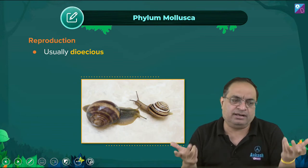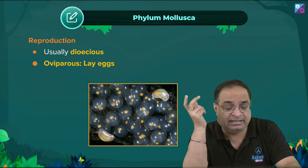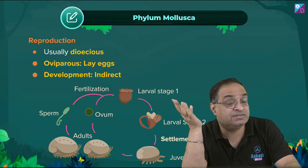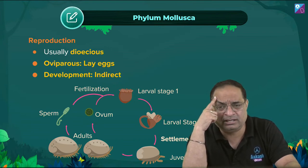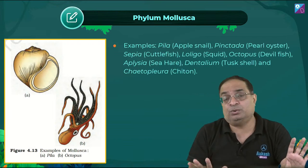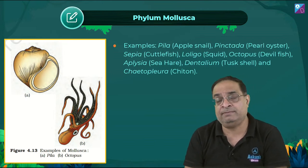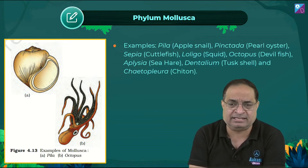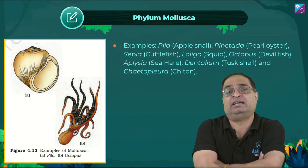Molluscs are also dioecious — male and female are separate. Fertilization is internal and they are oviparous; fertilized eggs are released. Larval stages are present — development is indirect (glochidium larva is present). In NCERT, examples shown include Pila globosa (apple snail) and octopus (devil fish). Octopus's saliva is poisonous and it has three hearts.